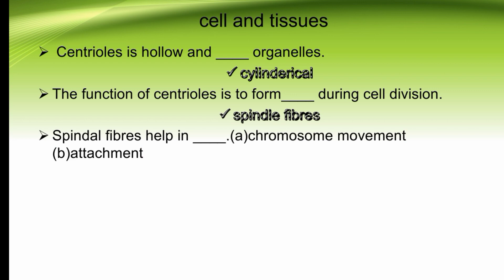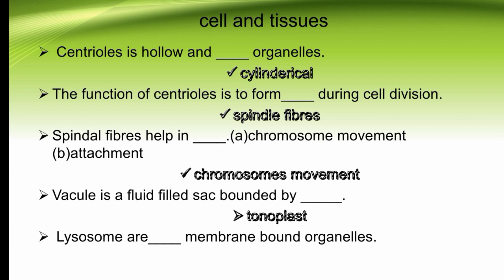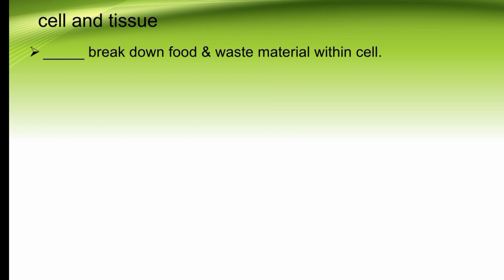Spindle fibers help in dash — chromosome movement or attachment. Spindle fibers help in chromosome movement. The right option is A. Vacuole is a fluid-filled sac bounded by dash — tonoplast. Lysosomes are dash membrane-bounded organelles — single or double. Lysosomes are single membrane-bounded organelles. The right option is A. Lysosomes break down food and waste material within the cell.